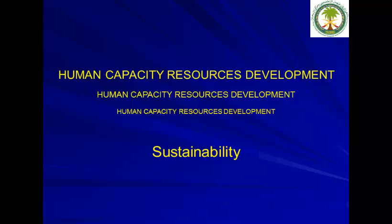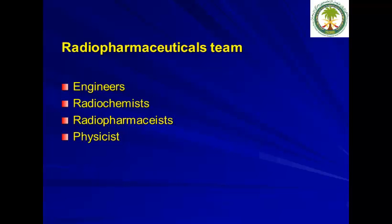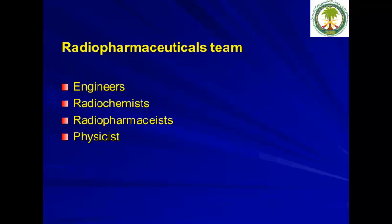An important element in establishing a cyclotron and radiopharmaceutical center is developing your own human resource capacity — I stress this three times because having your own trained people ensures sustainable production. The radiopharmaceutical team comprises engineers, radiochemists, radiopharmacists, and physicists. These are difficult to hire, and well-trained specialists command high salaries — you must offer something like a rare specialty allowance to retain your staff.